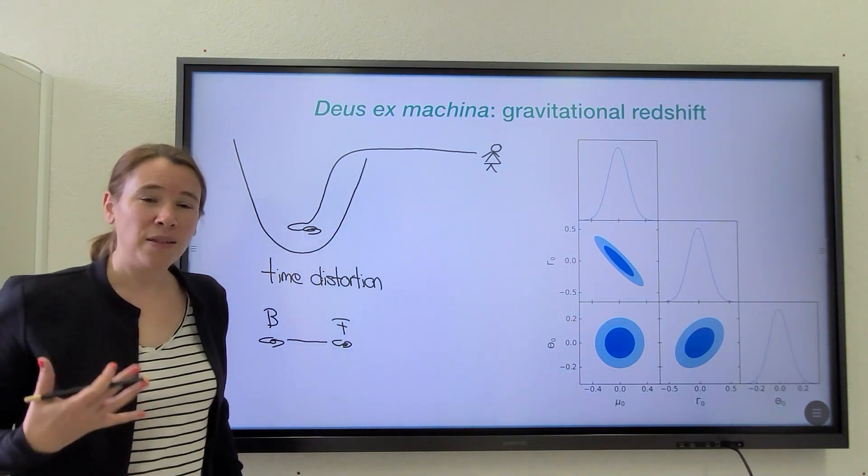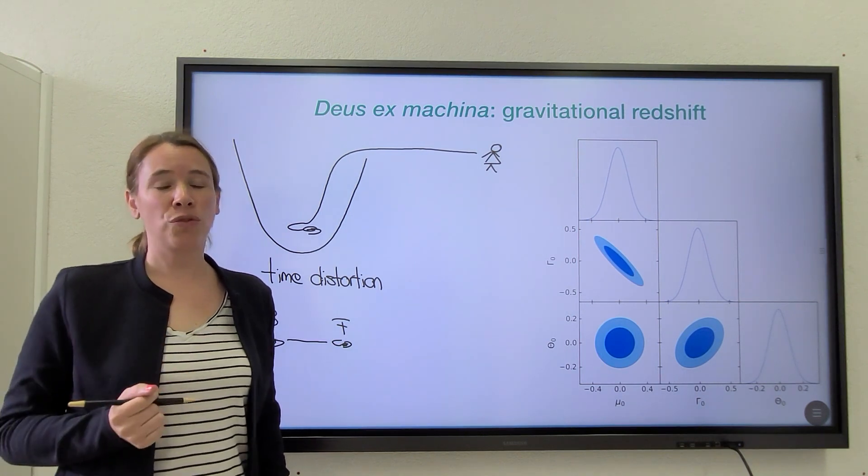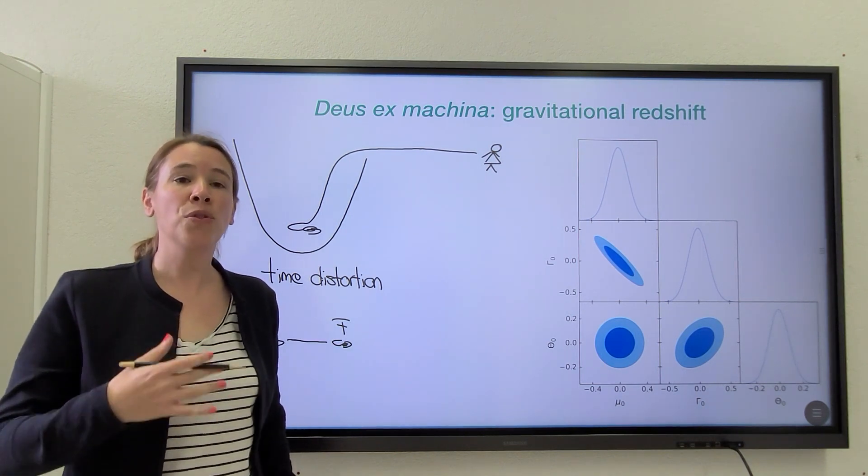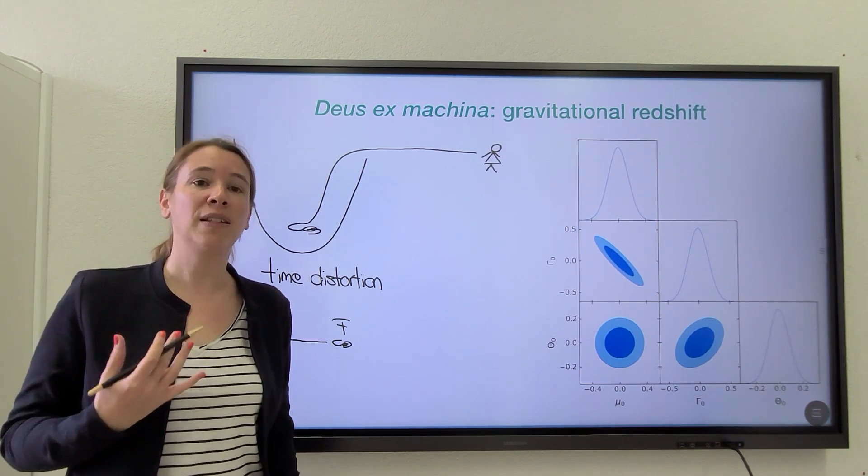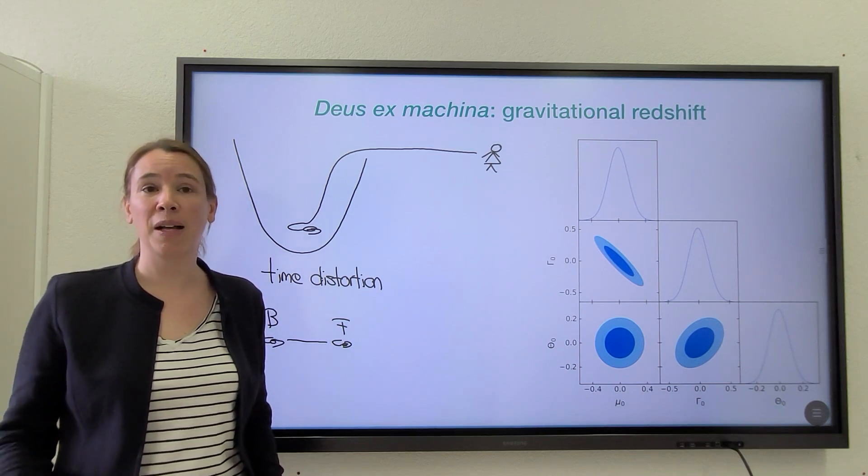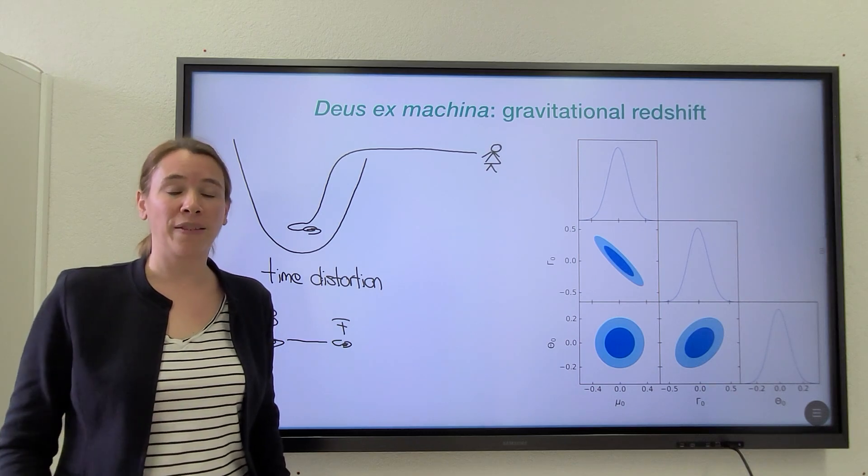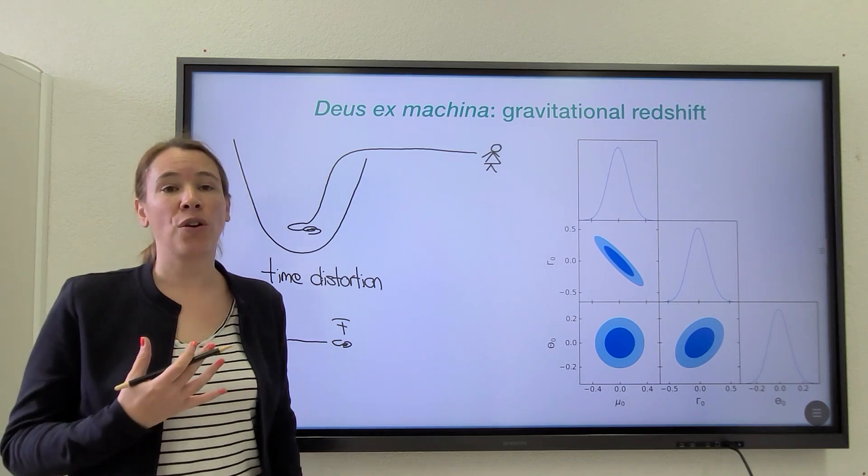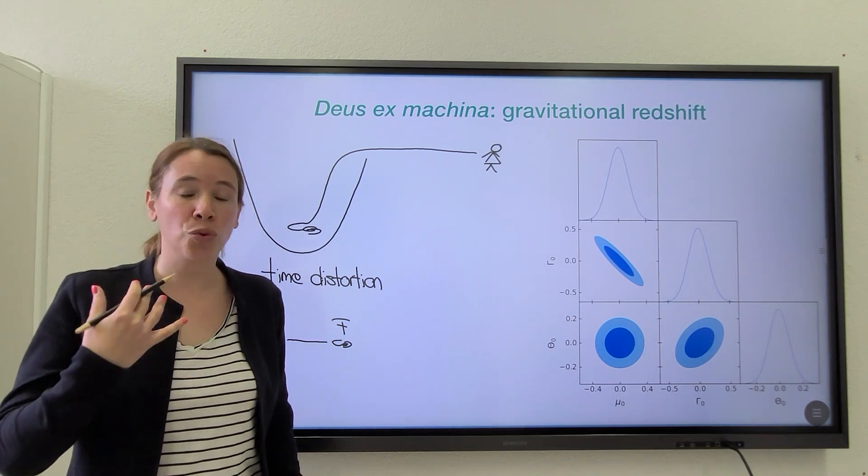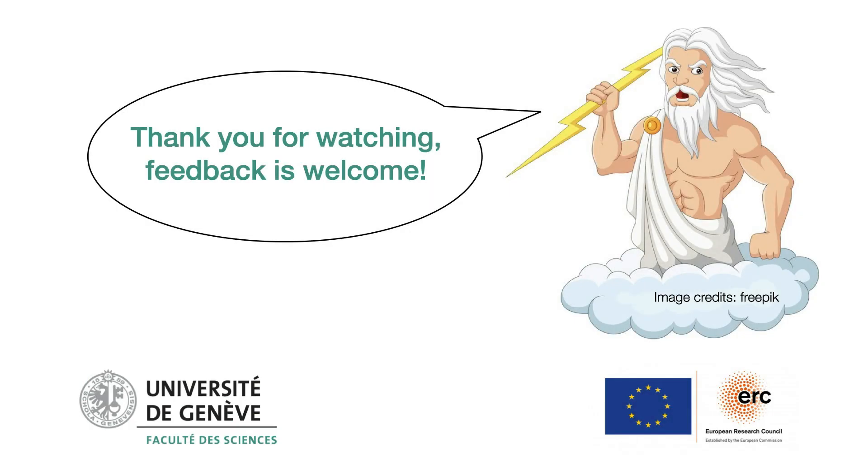So the message of our work is that if we want to constrain deviations from general relativity in the most possible model-independent way, for example, without assuming the validity of the equivalence principle for dark matter, then it is crucial to extend large-scale structure analysis and to add on top of redshift-space distortion a measurement of this dipole which is due to relativistic effects and in particular to gravitational redshift.